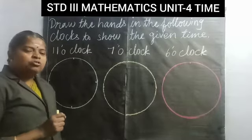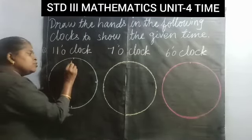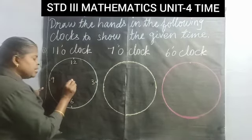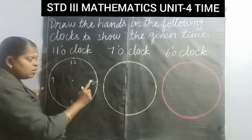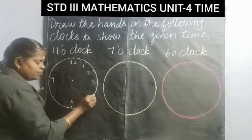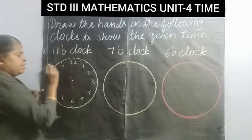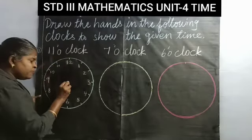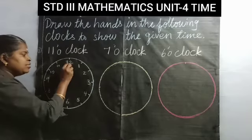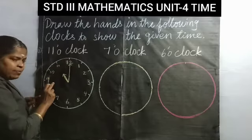Now we can draw the hands of the clocks to show the given time. First, there is 11 o'clock. Draw a circle, write 12 opposite 6, then 3 opposite 9, keep a center dot, and in the middle give equal distance and write 1, 2, 4, 5, 7, 8, 10, 11. For 11 o'clock, from the center point draw the hour hand — it should not touch the number, pointing near 11. Then the longer hand touches 12. So the time is now 11 o'clock.